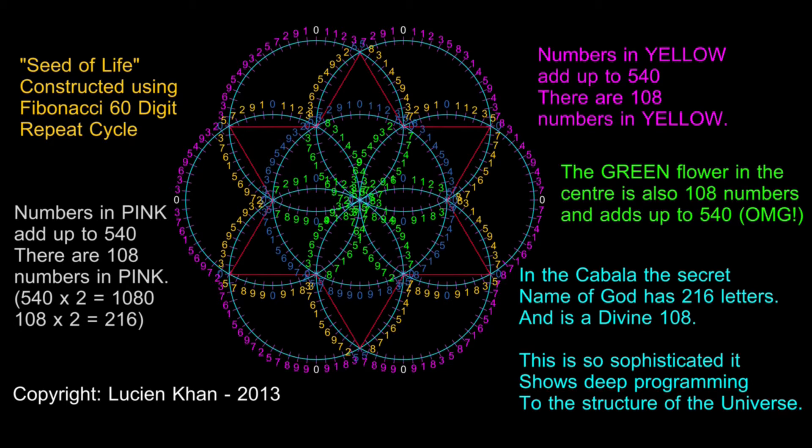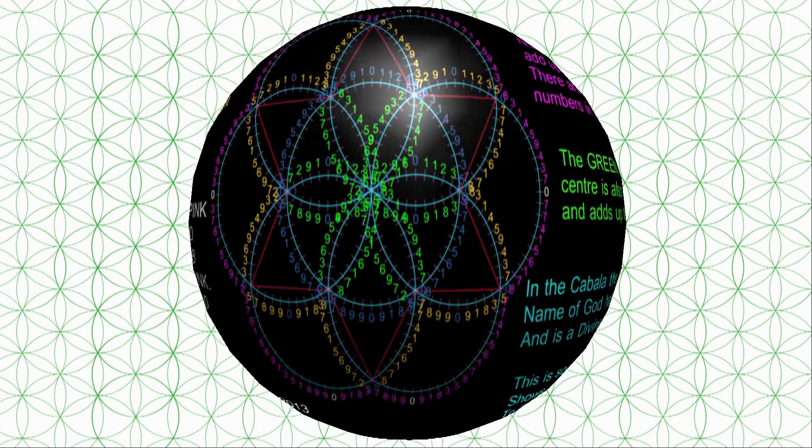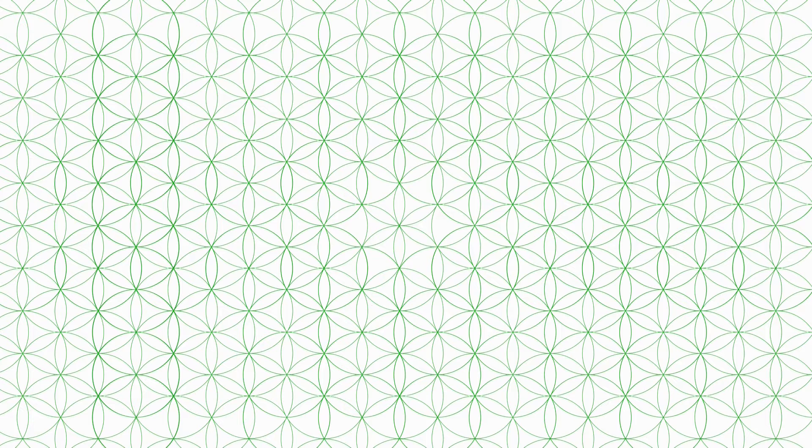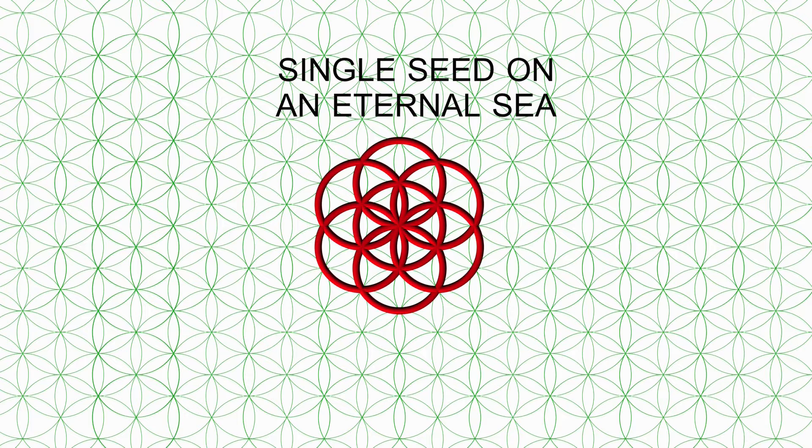It is important to note that the Fibonacci 60 digit repeat cycle continues for all eternity. When we look at the seed of life, we are looking at a fractal - a single seed floating upon an eternal sea. But all of the information from the whole exists in this single piece, like the DNA in your individual cells that store the information of your entire self.